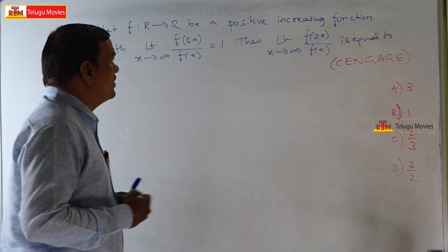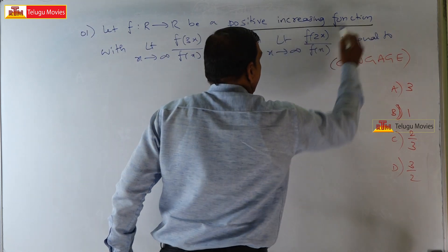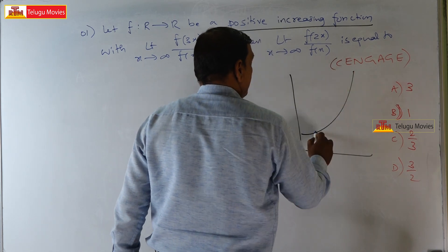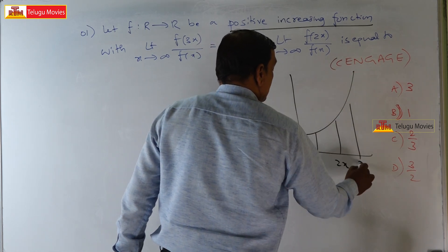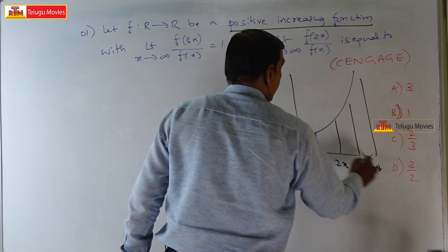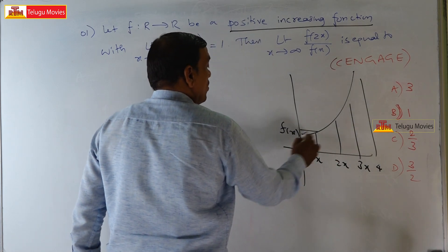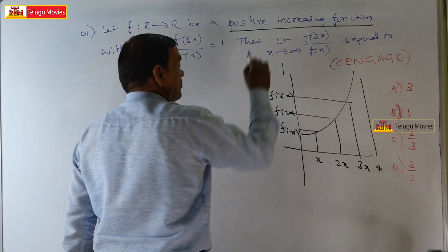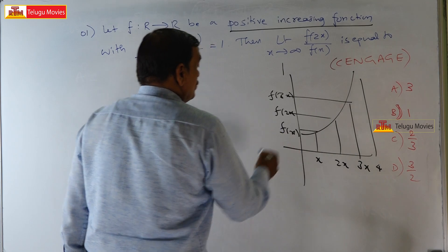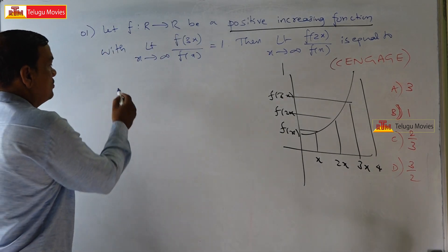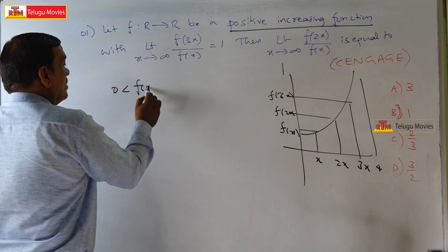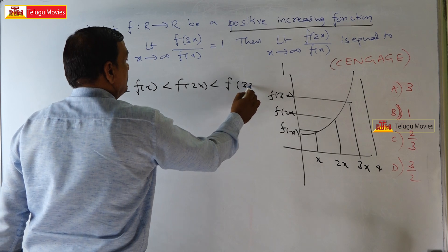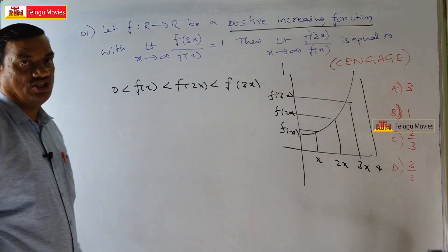Since f is an increasing function, if we have x, 2x, 3x, 4x, then correspondingly f(x) < f(2x) < f(3x) and so on. So we know that whenever it is an increasing function, 0 < f(x) < f(2x) < f(3x).